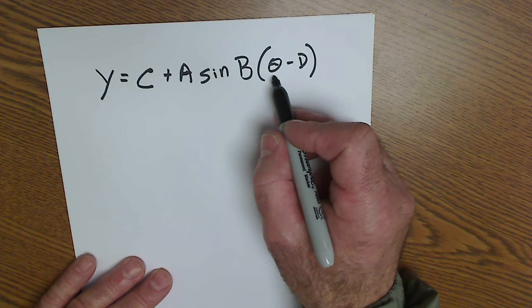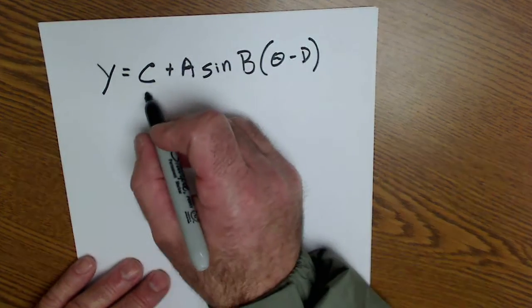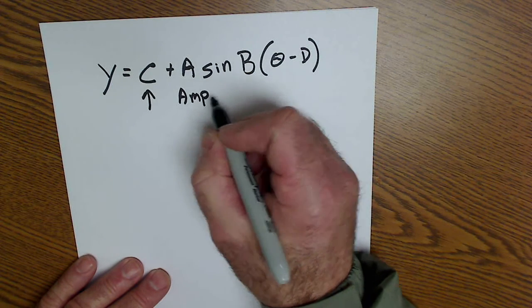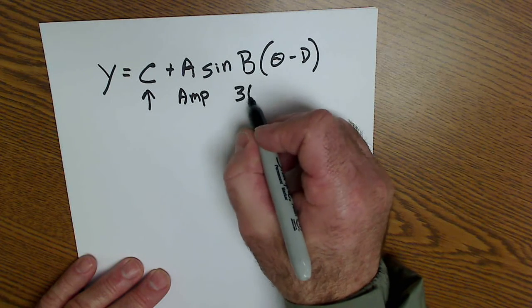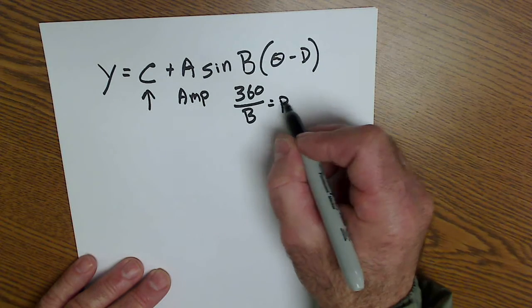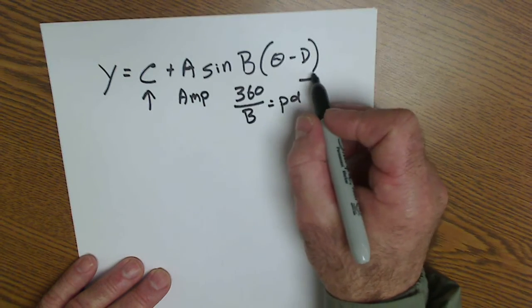Theta is important to note because you're in degrees. c is your vertical shift, a is your amplitude, b gives you your period. 360 degrees divided by that value b is your period, and d is your phase shift.